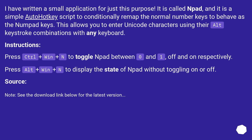I have written a small application for just this purpose. It is called numpad, and it is a simple AutoHotKey script to conditionally remap the normal number keys to behave as the numpad keys. This allows you to enter Unicode characters using their alt keystroke combinations with any keyboard. Instructions: Press Ctrl+Win+N to toggle numpad between 0 and 1 (off and on respectively). Press Alt+Win+N to display the state of numpad without toggling. See the download link below for the latest version.